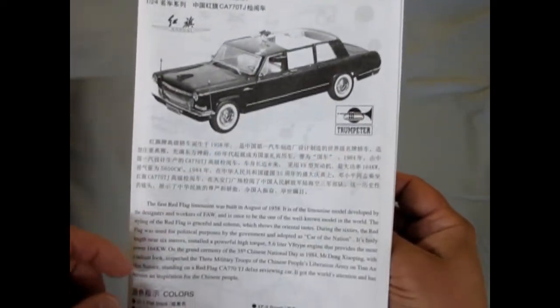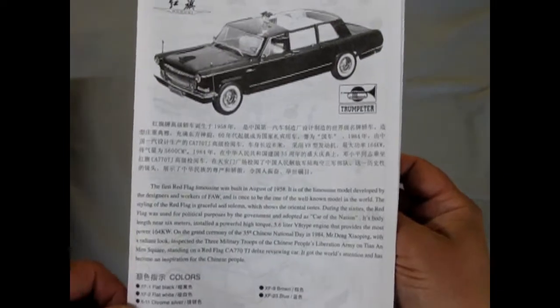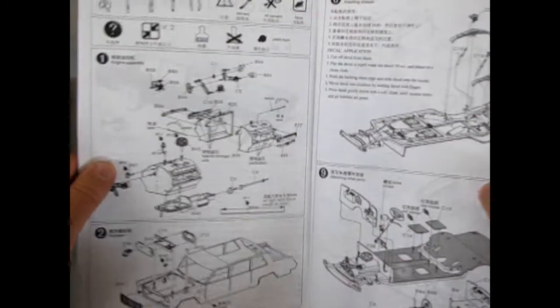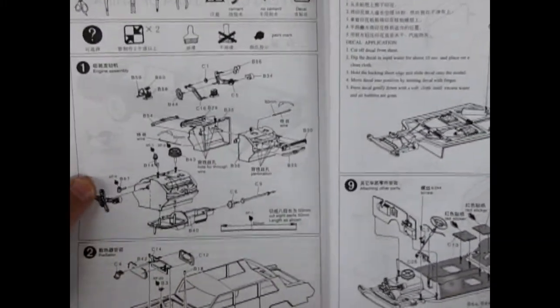It's got Chinese writing in there because Trumpeter is a Chinese company. And then underneath we have English.